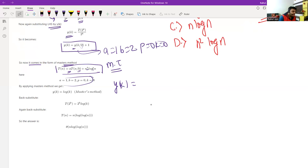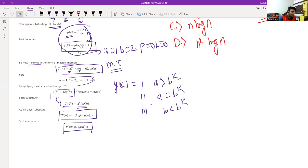So just by applying, there are certain rules in Master's theorem, three cases are there. Whether a is greater than b to the power k, or a equals b to the power k, or a is less than b to the power k. So based on that, what we can say is that after applying Master's theorem, we will get y_k equals log k. Now, we are going to back substitute and we are going to get T into 2 to the power k equals 2 to the power k log k. And then again, back substituting, we are going to get T(n) equals n log of log n. So the answer here is theta of n log of log n.